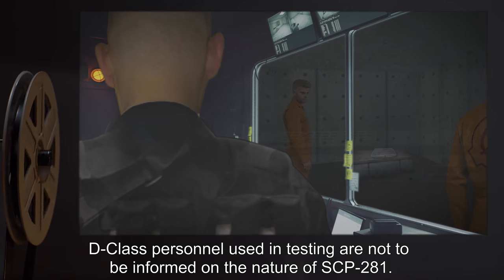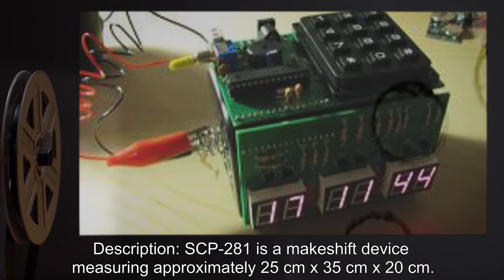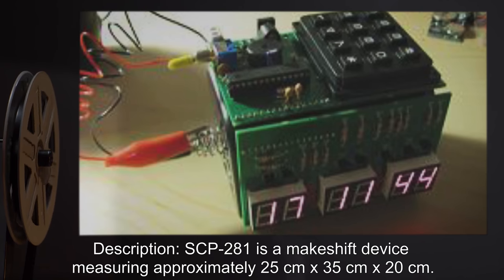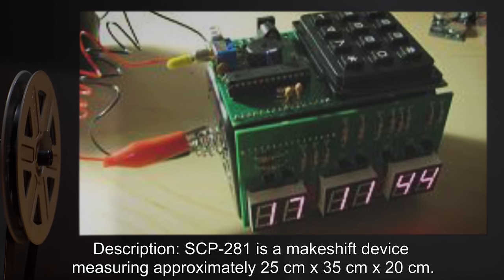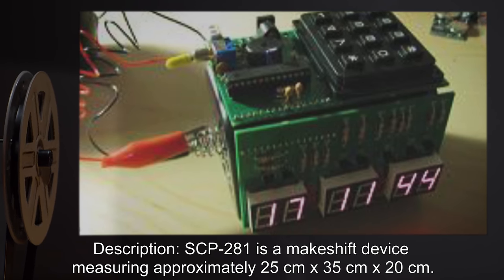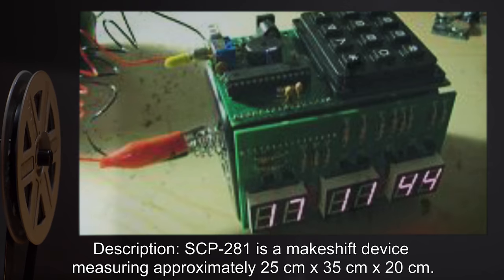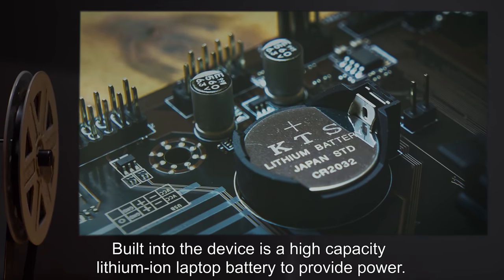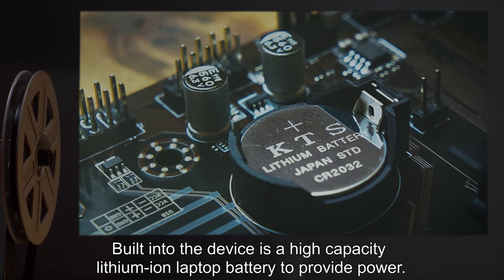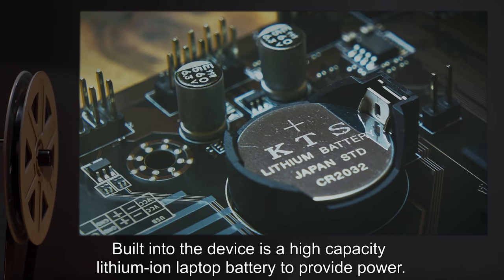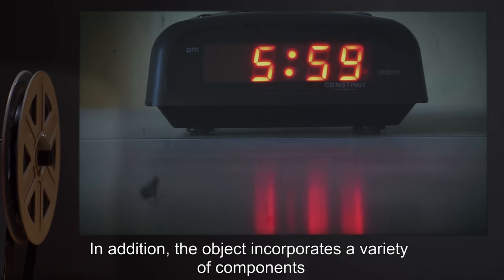Description: SCP-281 is a makeshift device measuring approximately 25 centimeters by 35 centimeters by 20 centimeters. Built into the device is a high capacity lithium-ion laptop battery to provide power. In addition, the object incorporates a variety of components from such diverse sources as a Phillips brand alarm clock,